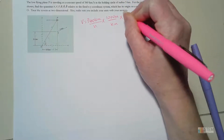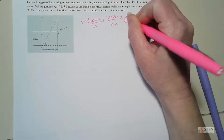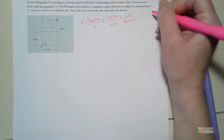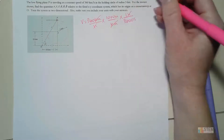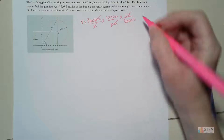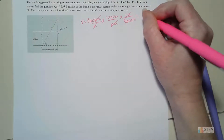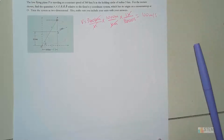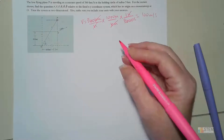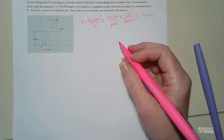For each hour we have 3600 seconds. Kilometers cancel and hours cancel, giving us meters per second. That ends up being 100 meters per second.